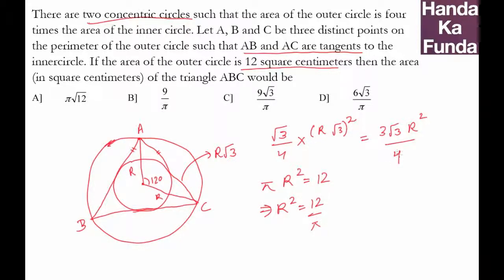And if r square is 12 by pi, I put that here. What will I get? 3 root 3 by 4 into 12 by pi. This gets cancelled 3. So what do I get?